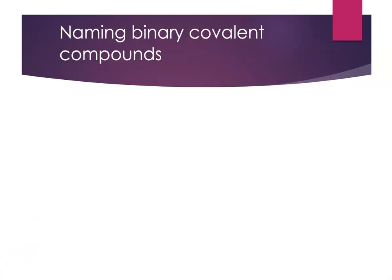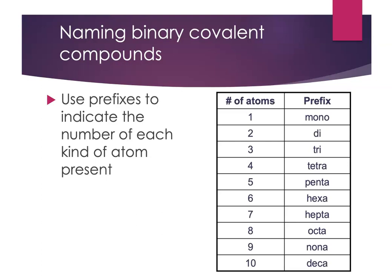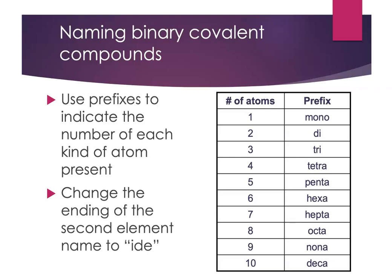It turns out that naming binary covalent compounds is really simple and straightforward. We're going to use prefixes to indicate the number of each kind of atom present, and you're actually familiar with most of them. Mono for one, di for two, tri for three, tetra for four — we always use tetra in chemistry. Penta for five, hexa for six, hepta for seven, octa for eight — we all know that from octopus — nona for nine, deca for ten. In an introductory chemistry course, we're really not going to go above ten. Then we look at the name of the second element and change its ending to -ide.